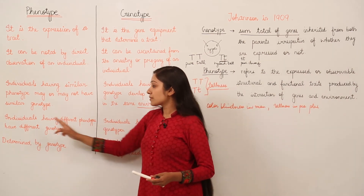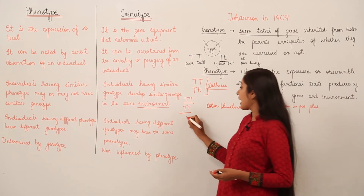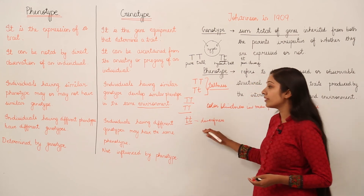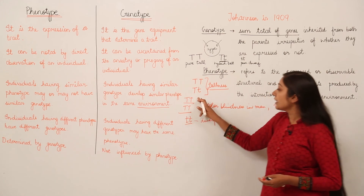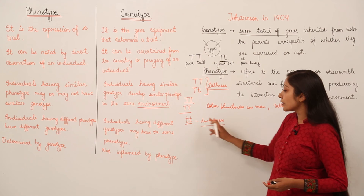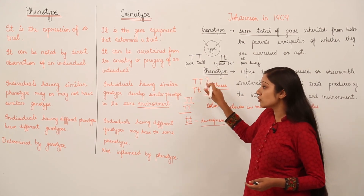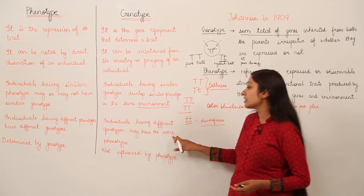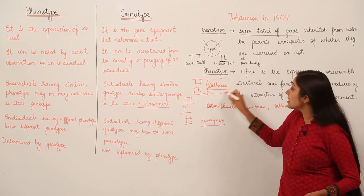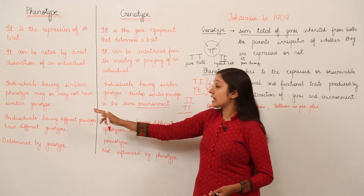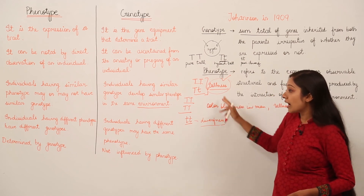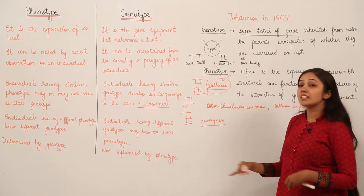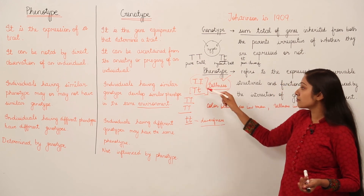Individuals having different phenotypes have different genotypes. For example, the combination tt encodes for dwarfness, so a phenotype of dwarfness has genotype tt, and a phenotype of tallness has genotype TT or Tt. However, individuals having different genotypes may have the same phenotype — for instance, TT and Tt are different genotypes but both produce the same phenotype of tallness. If phenotypes are different, like tallness and dwarfness, the genotypes are different too.